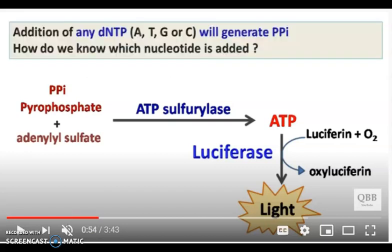One interesting question is that addition of any dNTP — A, T, G, or C — will generate pyrophosphate. So how do we know which nucleotide is added? To solve this problem, the reaction is carried out in a flow cell where only one dNTP is added at a time.